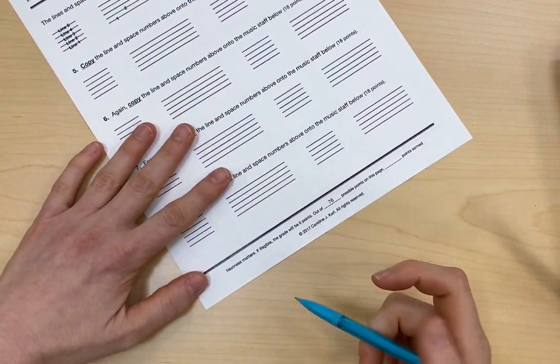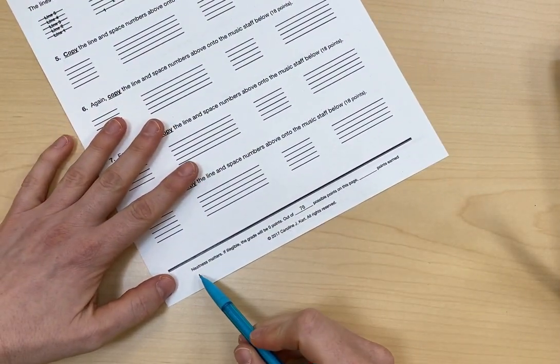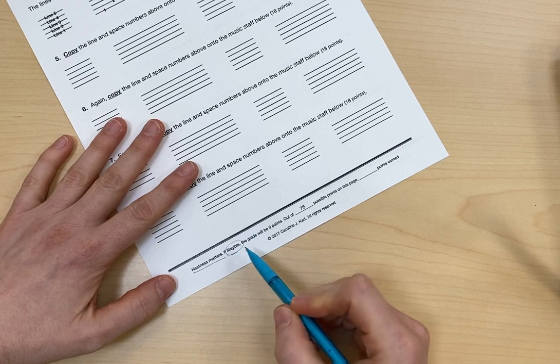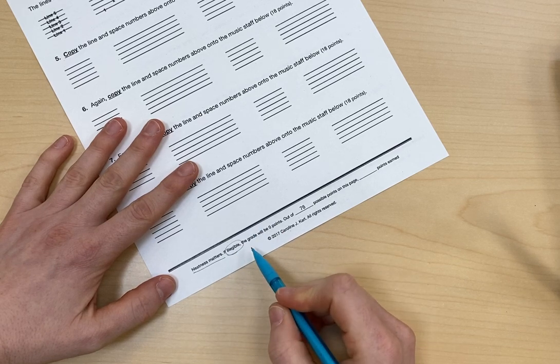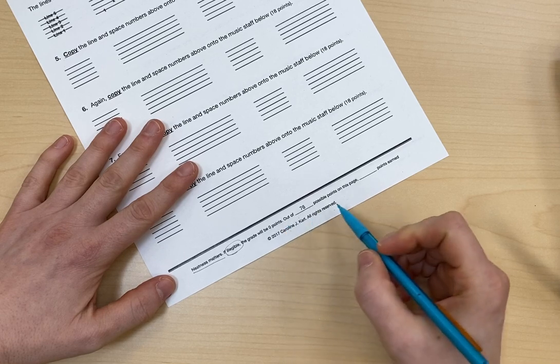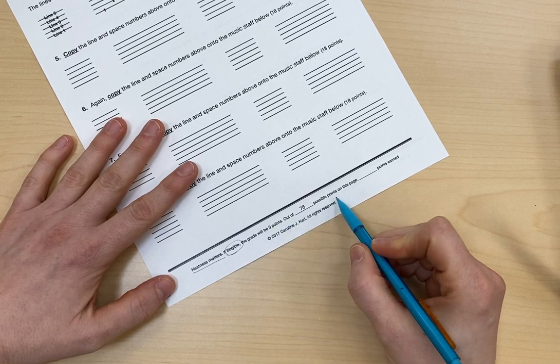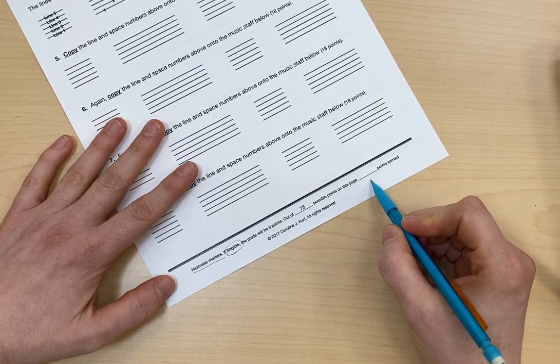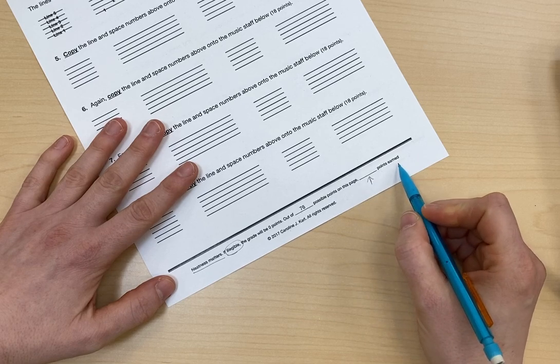Now, as a reminder, on our theory paper, neatness matters. If it's illegible, which means if we can't read it, then the grade will be zero points out of 76 possible points on this page. And this is where your score will go for your total points earned.